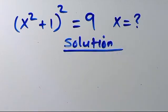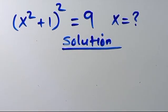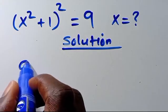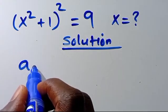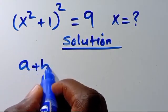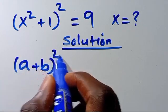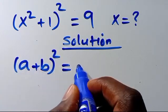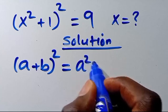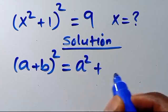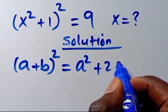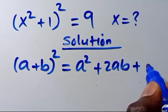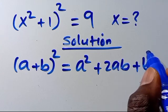Let's solve it. We recall that when we have (A + B) to the power of 2, it equals A squared plus 2AB plus B squared.